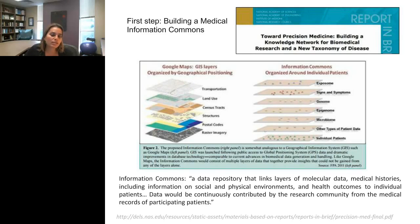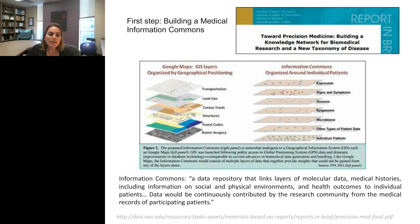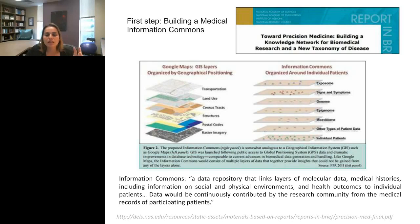There's been a lot of work over the last several years on how we can share data across institutions and internationally, and from clinical and research labs, to build robust databases that help with the interpretation piece of the clinical genomics pipeline. One report from the National Academies of Sciences in 2011 set forth the vision of building what they call a medical information commons — a data repository that links layers of molecular data, medical histories, social and physical environments, and health outcomes to individual patients. Data would be continuously contributed by the research community. Originally envisioned as a centralized database like Google Maps, we're now seeing more locally controlled and federated models being developed.